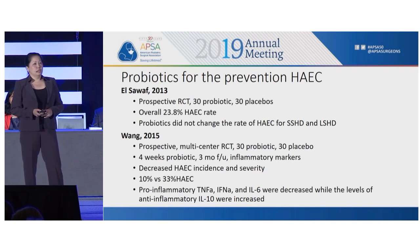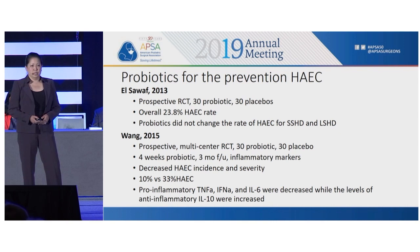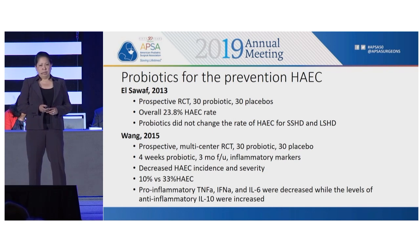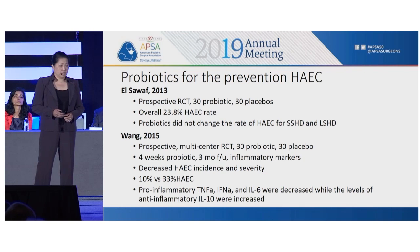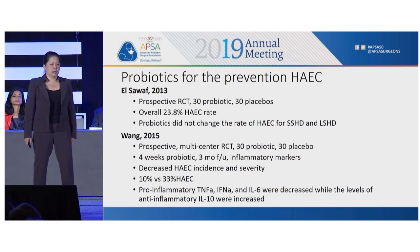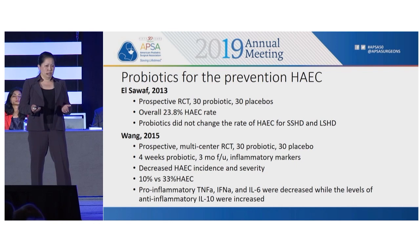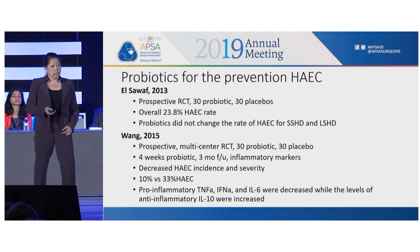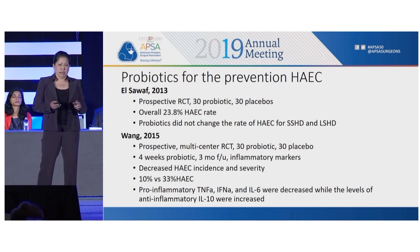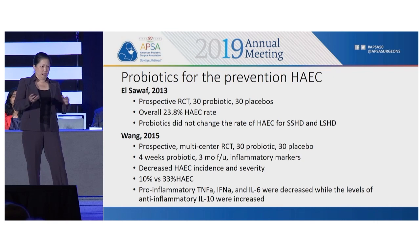Do probiotics help in the prevention of Hirschsprung's-associated enterocolitis? There are two randomized controlled studies with 30 patients in each arm comparing probiotics versus placebo, with conflicting results. The first study found a 24% rate of Hirschsprung's-associated enterocolitis and found probiotics did not change the rate of enterocolitis for either long-segment or short-segment disease. The paper by Wang et al. showed a decrease in Hirschsprung's-associated enterocolitis, a decrease in severity, a decrease in pro-inflammatory biomarkers, and a decrease in anti-inflammatory biomarkers, with equal amounts of long-segment in each group.